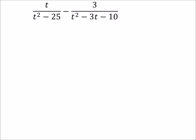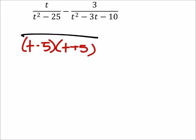In this first denominator here, this t squared minus 25, that's a difference of two perfect squares. So I can split that up into t minus 5 and t plus 5. That's our first denominator there.